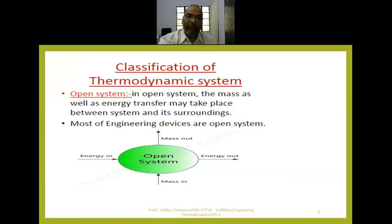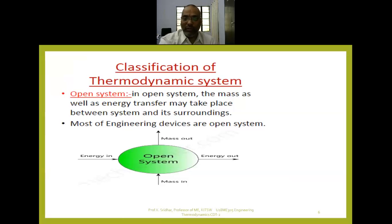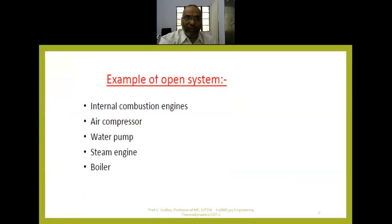For the open system, both mass transfer and energy transfer take place from the system to the surroundings or vice versa. Almost all engineering devices are examples of open systems — steam boiler, steam turbine, hydraulic turbine, gas turbine, reciprocating air compressor, rotary air compressor, centrifugal air compressor, centrifugal pump, and diffuser. About 99.5% of engineering devices are examples of open systems. Other examples include IC engines, water pumps, and steam engines.